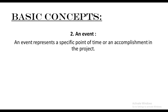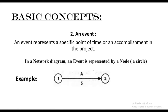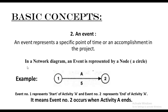Second: an event. An event represents a specific point of time or an accomplishment in the project. In a network diagram, an event is represented by a node, that is nothing but a circle. For example, event one — a circle with node one — represents the start of any activity. In this case, activity A, and event number two represents the end of activity A. So activity A starts from one and ends at event two. Event number two will occur only when activity A ends. An event is always represented by a circle.